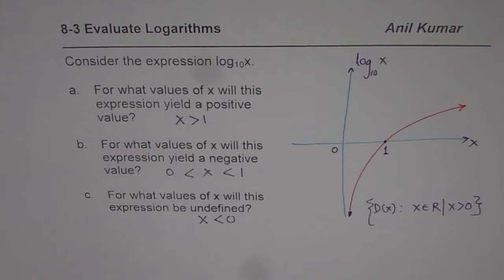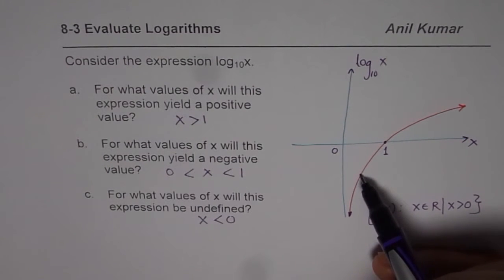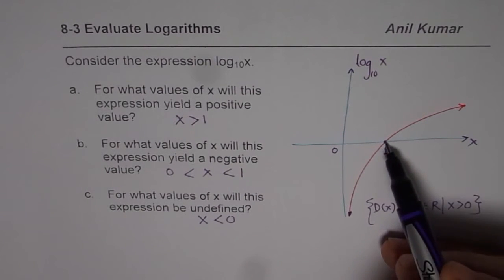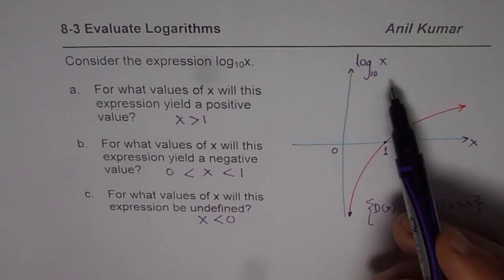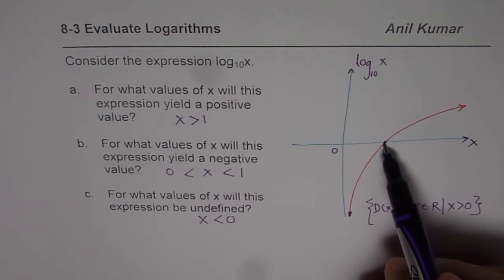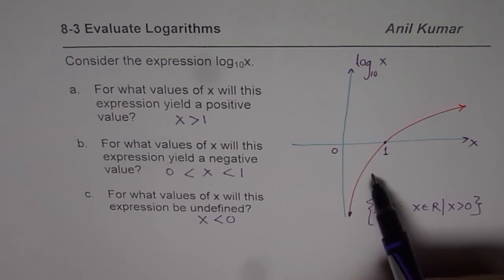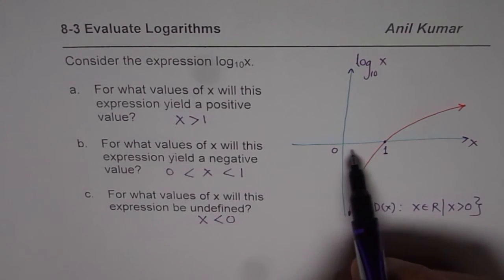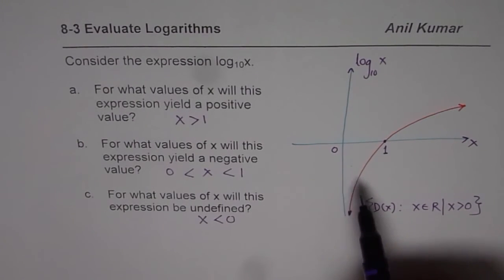So whenever you are evaluating logarithmic expressions, you can actually get negative or positive answer or even 0. Most of the time, if it is not a transformed function, 0 will always be at 1. And if x value is between 0 and 1, we get negative answers.